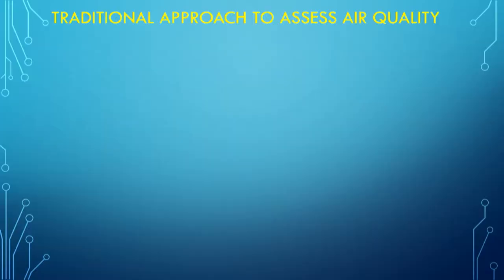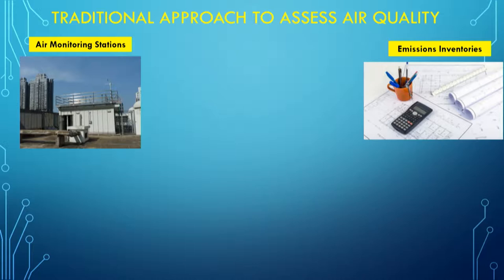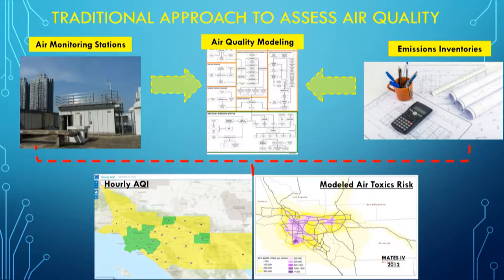What I'm going to try to do today is give you a very brief introduction to optical remote sensing and its application for air quality monitoring. Until very recently, the traditional approach on assessing air quality and air quality impact was to conduct stationary monitoring at fully equipped air monitoring stations, collect emission inventory data, combine these together in some sort of air quality modeling, and perform calculations to come up with different types of assessment — like an hourly AQI for the South Coast Air Quality Management District.